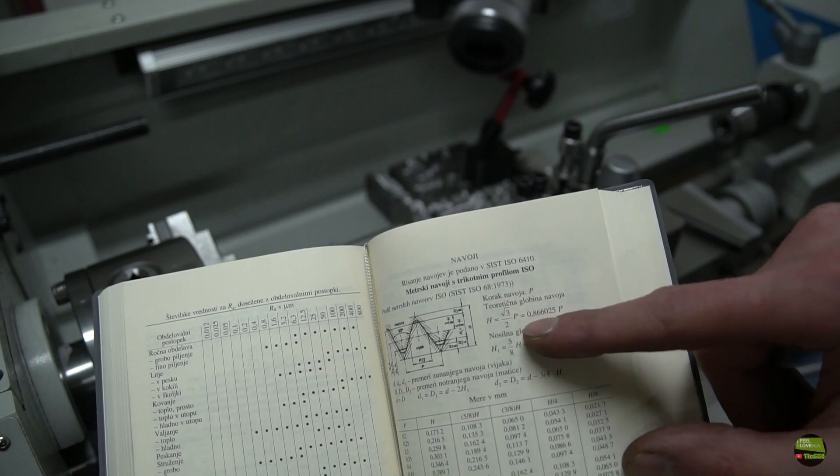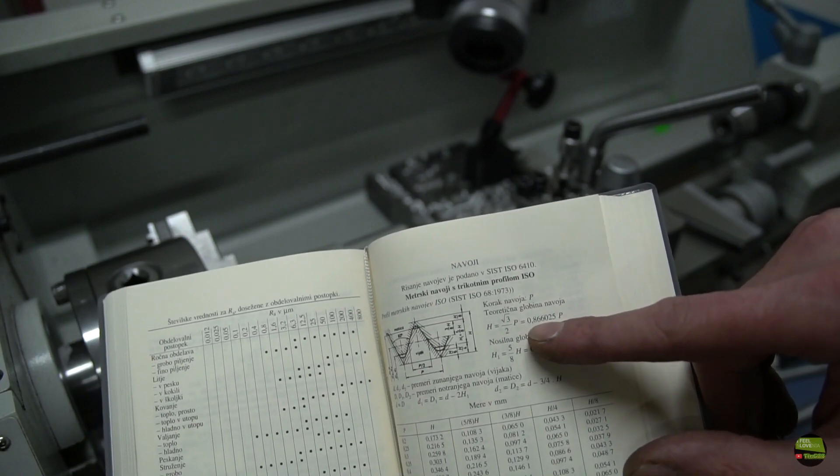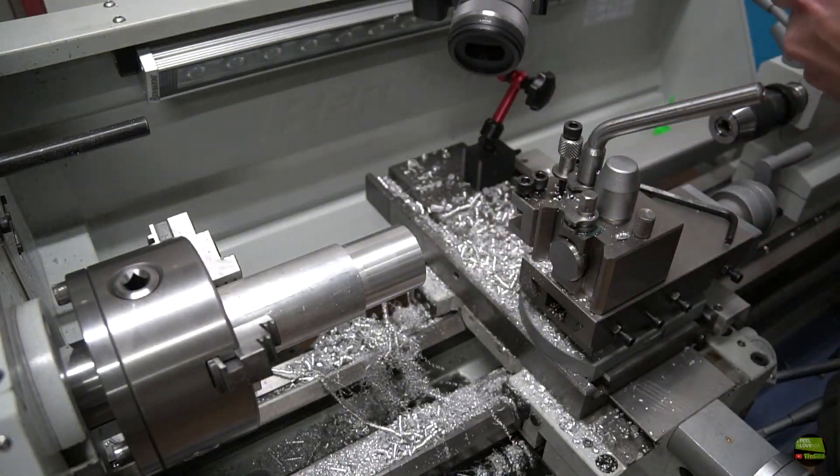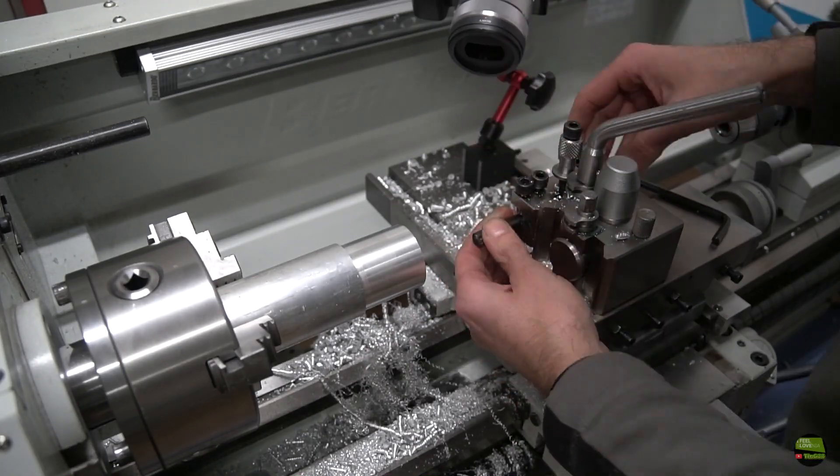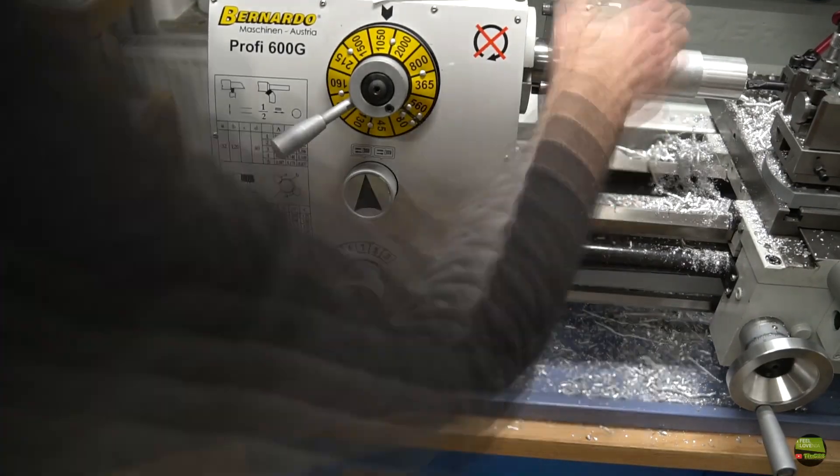Pretty close. Now do some calculations on how deep I need to cut the thread. Prepare the thread cutting tool and of course set the feed to proper pitch. In my case it's 1.5mm per turn.